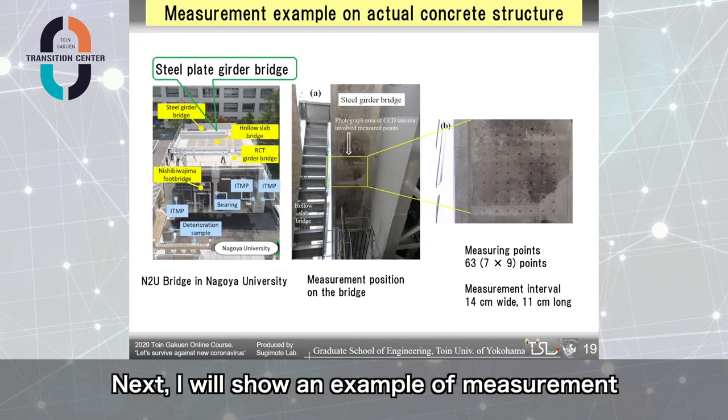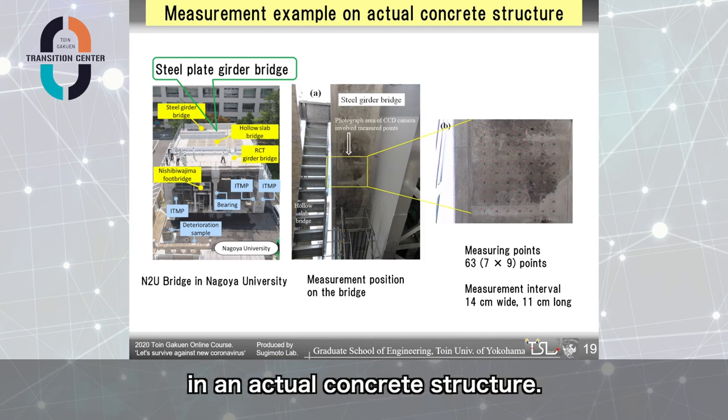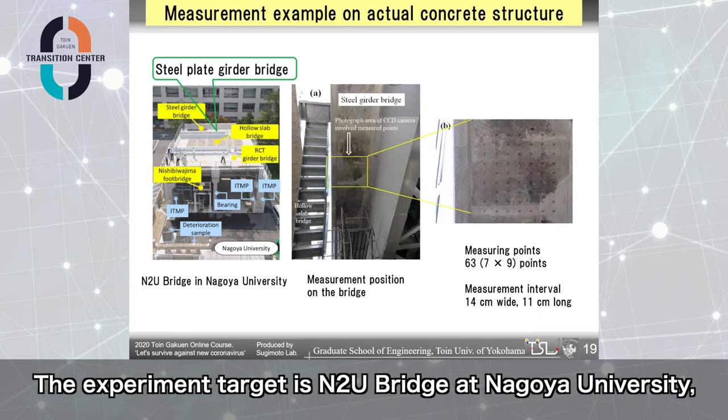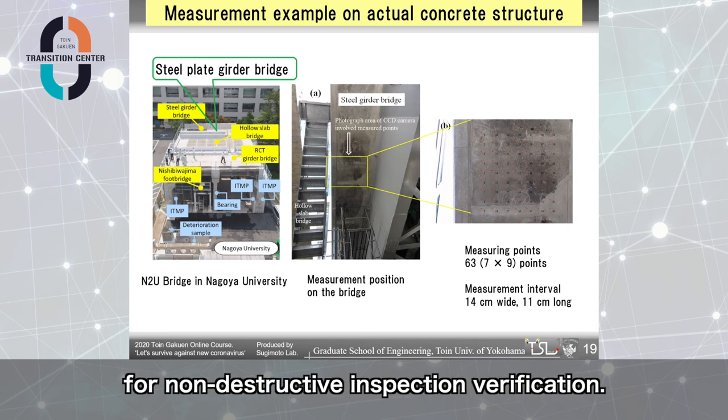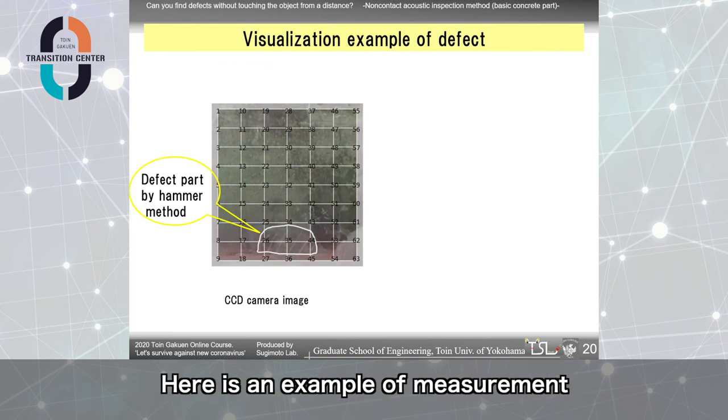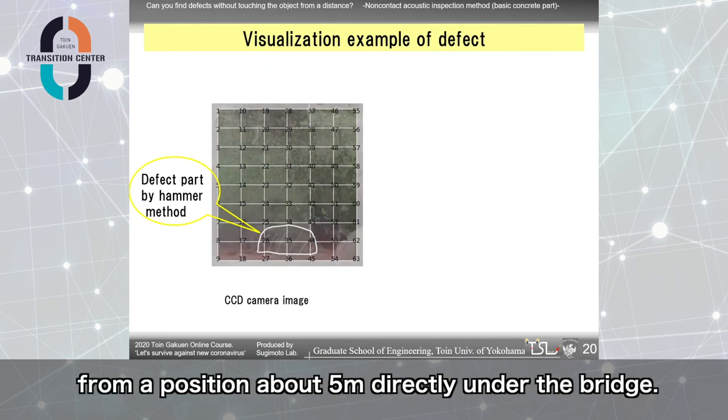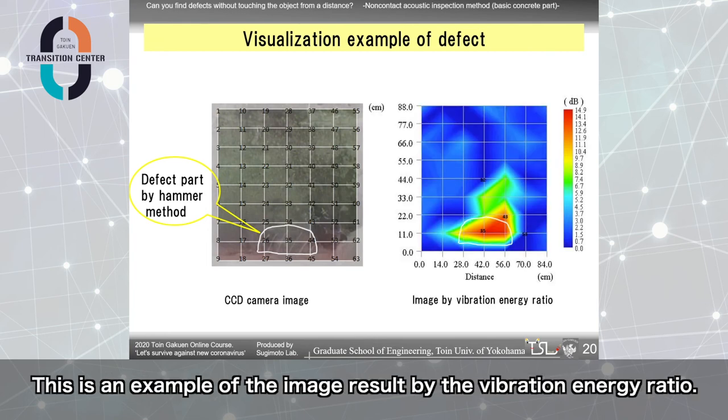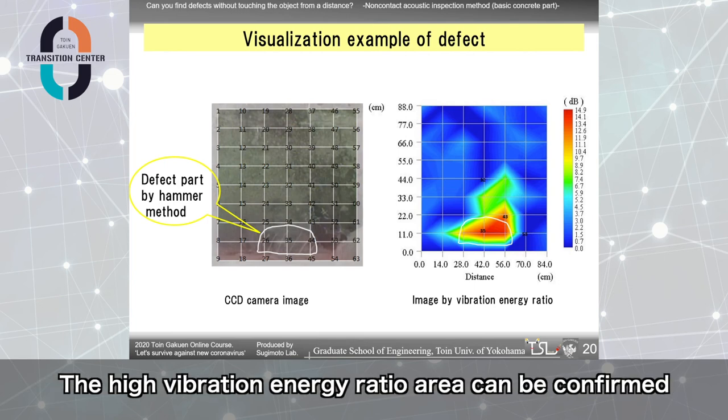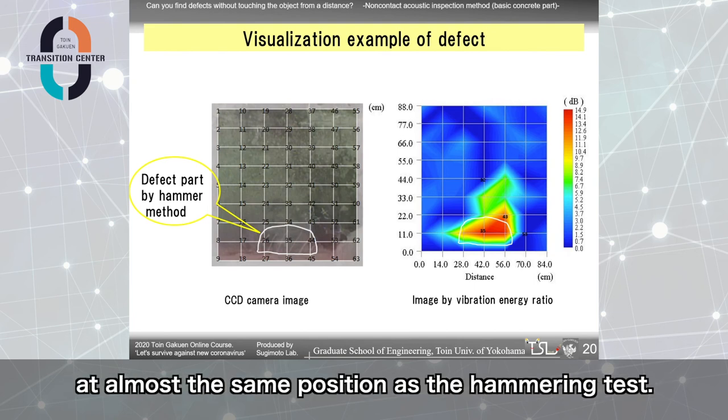Next, I show an example of measurement in an actual concrete structure. The experiment target is an entry bridge called New Bridge at Nagoya University. It is an old bridge preserved for non-destructive inspection verification. Here is an example of measurement from a position about 5m directly under the bridge. The white frame at the bottom of the figure is the defect detected by the hammering test. This is an example of the image desired by the vibration energy ratio. The high vibration energy ratio area can be confirmed at almost the same position as the hammering test.